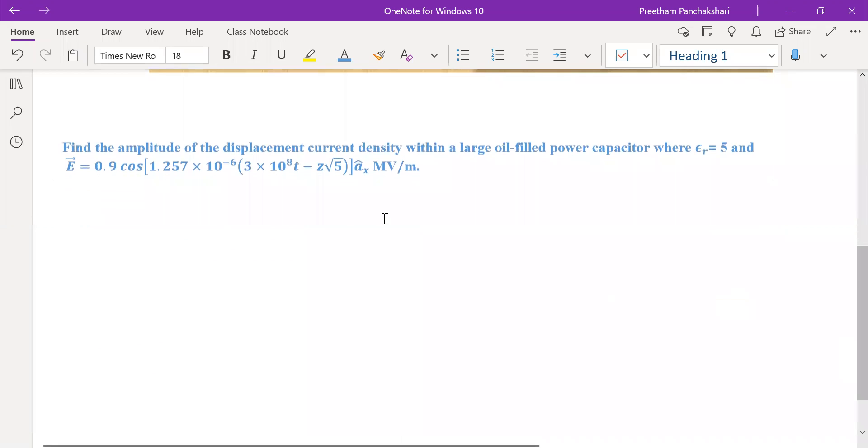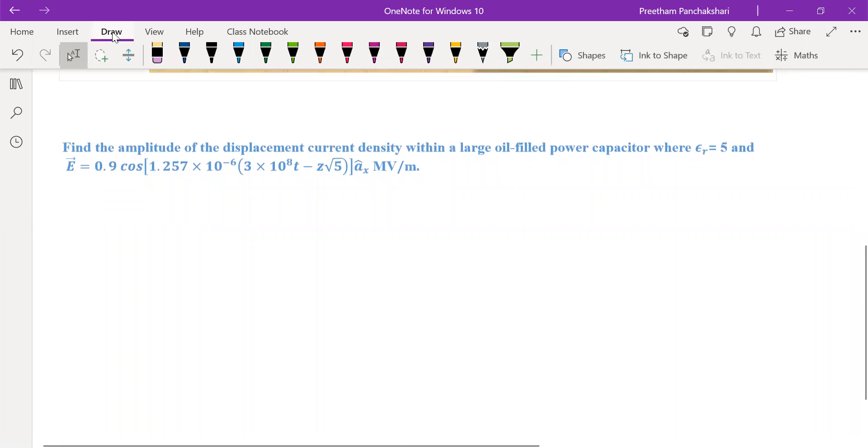Let us see what is the relation required. The displacement current density Jd is given by ∂D/∂t. That is, differentiation of electric flux density D with respect to t gives us displacement current density.